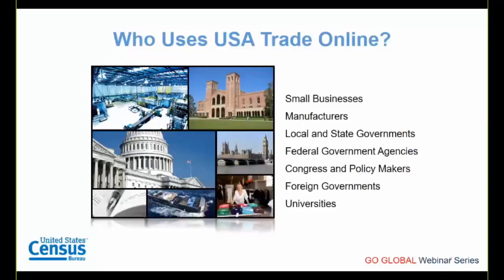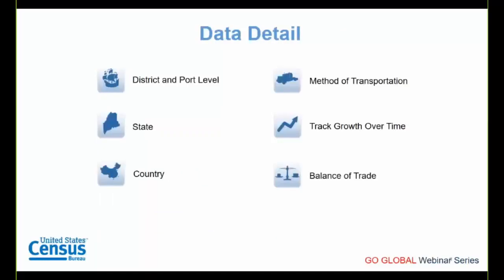USA Trade Online has many users from people in industry and government to academia. The tool has detailed data in four distinct databases: district-level data, port-level data, state-level data, and NAICS — the North American Industry Classification System. Each database has different levels of detail. For instance, port data includes information on method of transportation, whereas NAICS has balance of trade data.